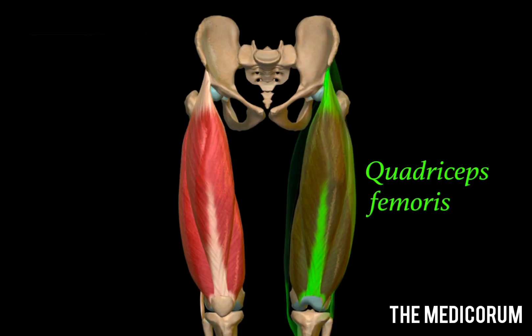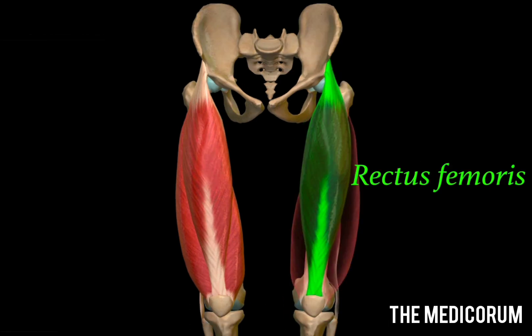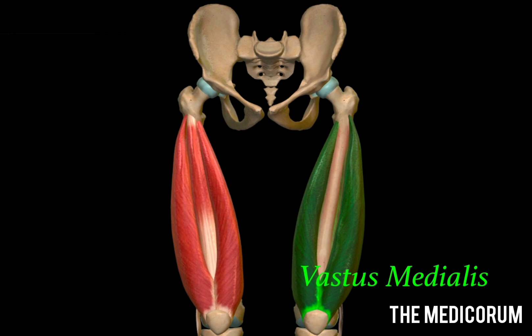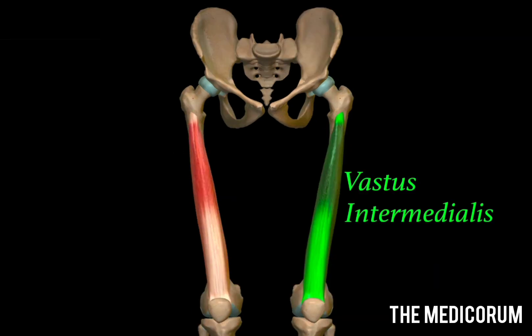After these two muscles we have the quadriceps femoris, which is formed of four muscles. The first is the rectus femoris — a fusiform muscle with bipennate superficial fibers. The second is the vastus lateralis, situated on the lateral side and the largest part of the quadriceps femoris. Medial to vastus lateralis lies the vastus medialis. In between both vastus lateralis and medialis lies the vastus intermedius.